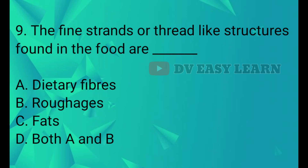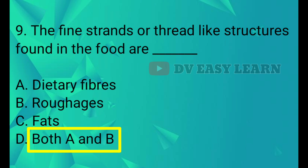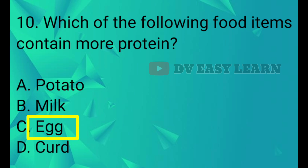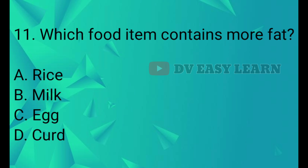Q9. The fine strands or thread-like structures found in food are what? Q10 answer: Egg. Q11. Which food item contains more fat? Answer: Curd.